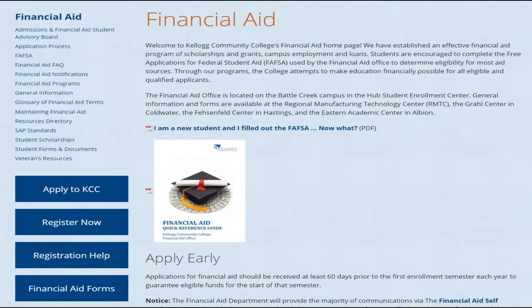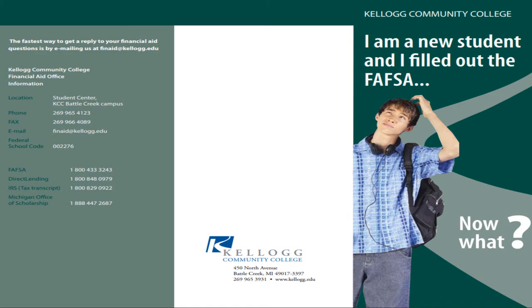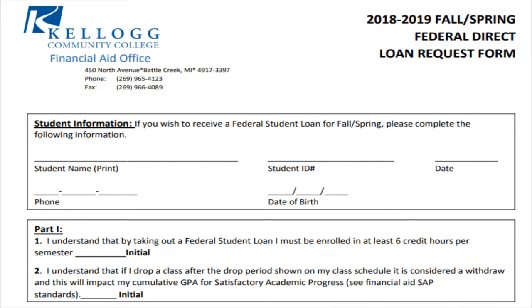To apply for student loans, visit KCC's financial aid website at kellogg.edu/financial-aid, where you can find several forms and instructions. Once on-site, you can download our fall and spring loan request form to complete and return to our office for processing.